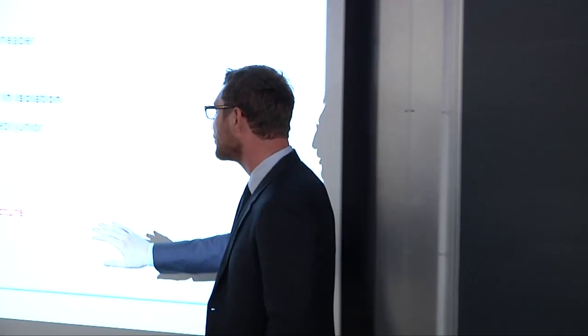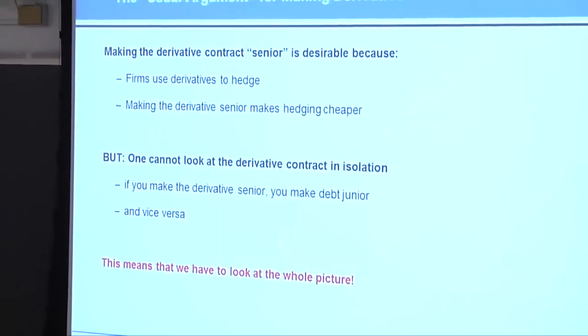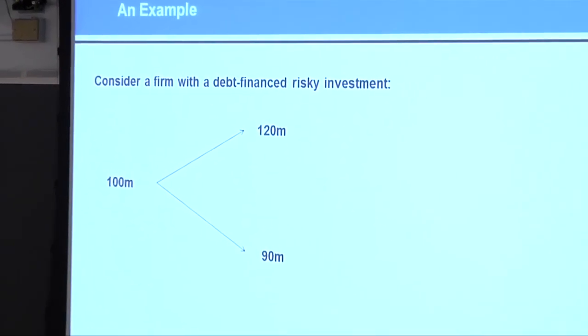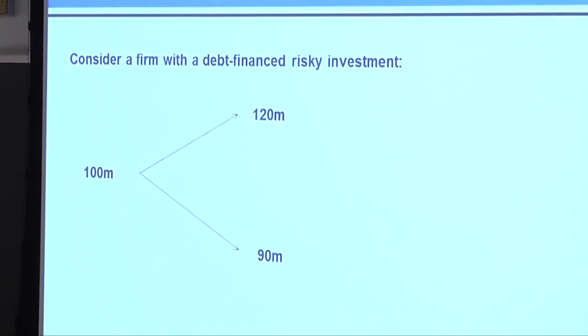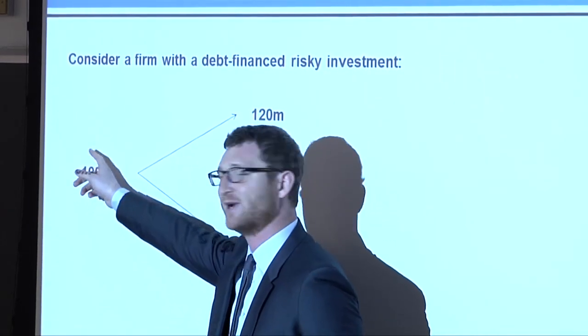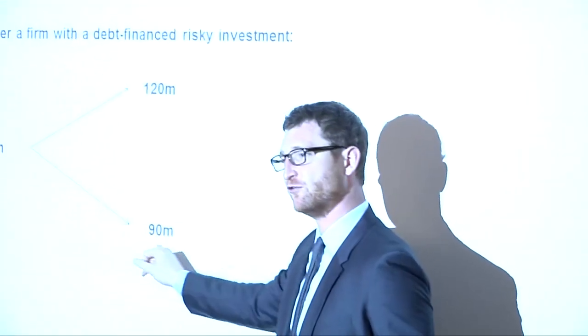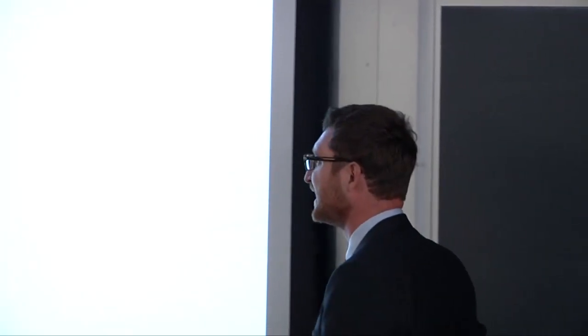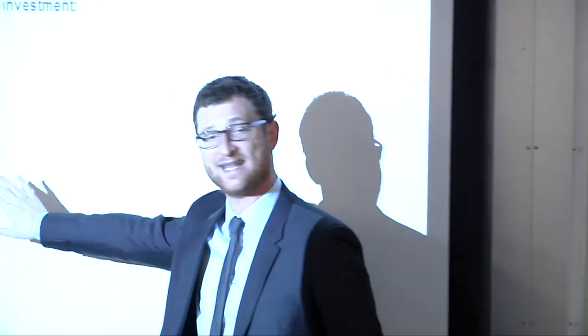Let's look at a simple example to see what happens if you try to look at the whole picture. Consider a firm that invests $100 million, raises $100 million in debt, and has a risky project: if things go well, the project pays off $120 million; if things go badly, it only pays off $90 million. Those $90 million will be less than the $100 million plus interest it has to repay to debt holders. So in the bad state, the firm would default and enter Chapter 11.